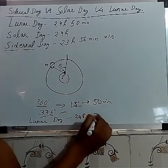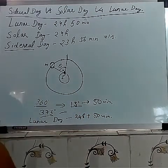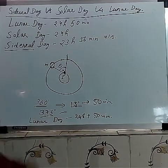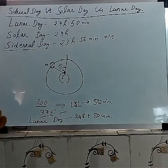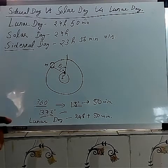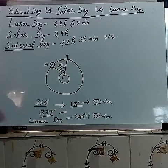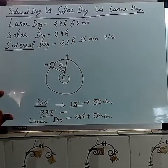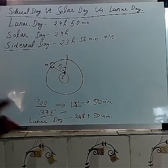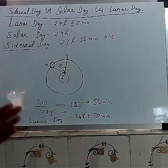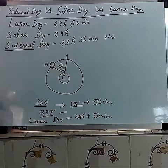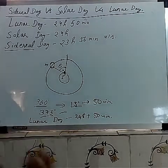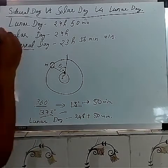So in this way, the lunar day is 24 hours 50 minutes, making it the longest. Then comes the solar day at 24 hours, and then the sidereal day. The sidereal day has more accuracy because we use the very distant star, which continuously appears fixed at its position. However, in our day-to-day life, we always use the solar day in our measurements.